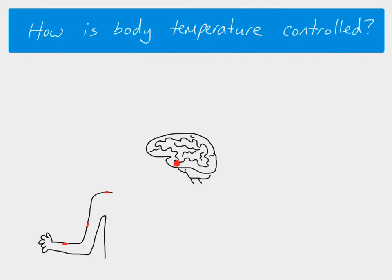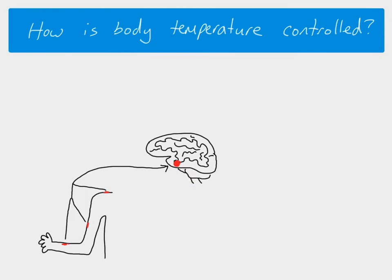The hypothalamus can detect temperature from receptors in the skin — thermoreceptors which detect the external temperature — and those receptors send impulses to the hypothalamus. The hypothalamus itself also has thermoreceptors which detect the temperature of the blood flowing through it via the blood vessels running through the brain. So the hypothalamus is receiving both internal temperature information and external temperature information.